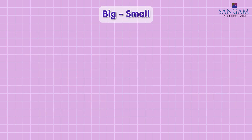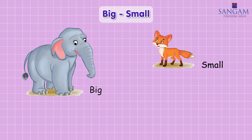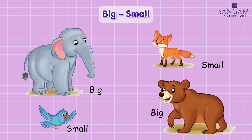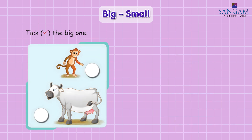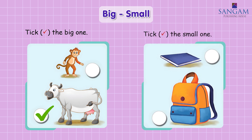Big. Small. What do you see, children? Big elephant, small fox, small bird, big bear. In the pictures below, tick the big one. Cow is bigger than monkey. Book, bag. Tick the small one.